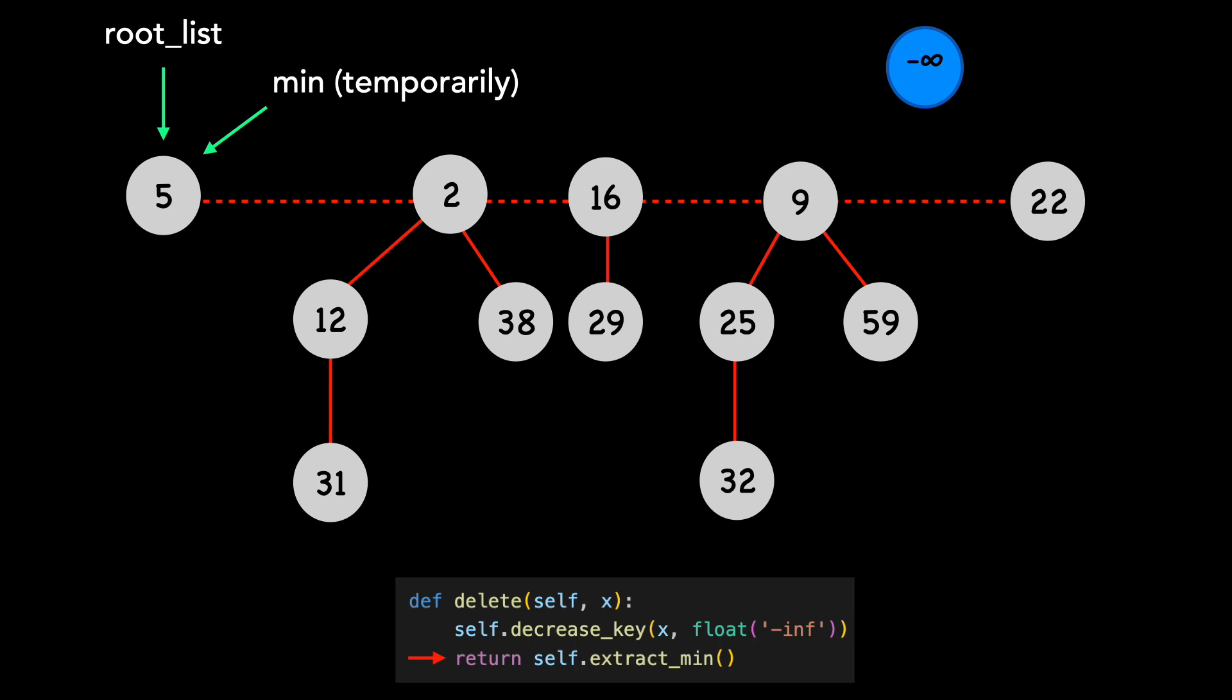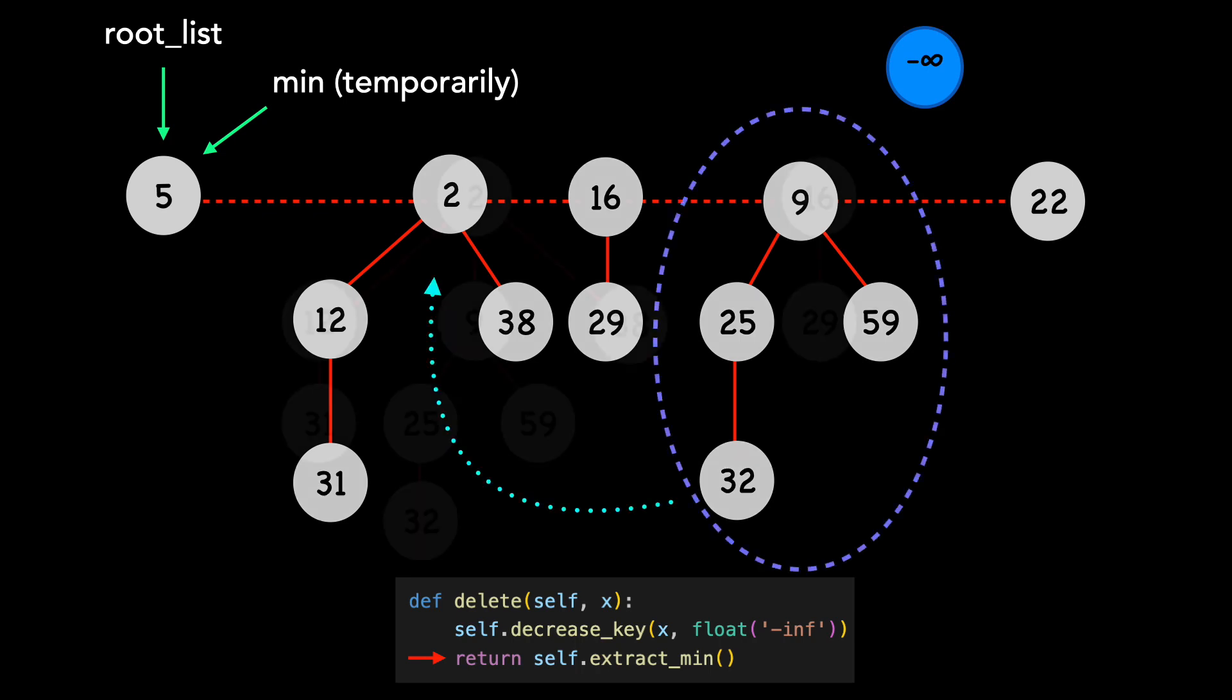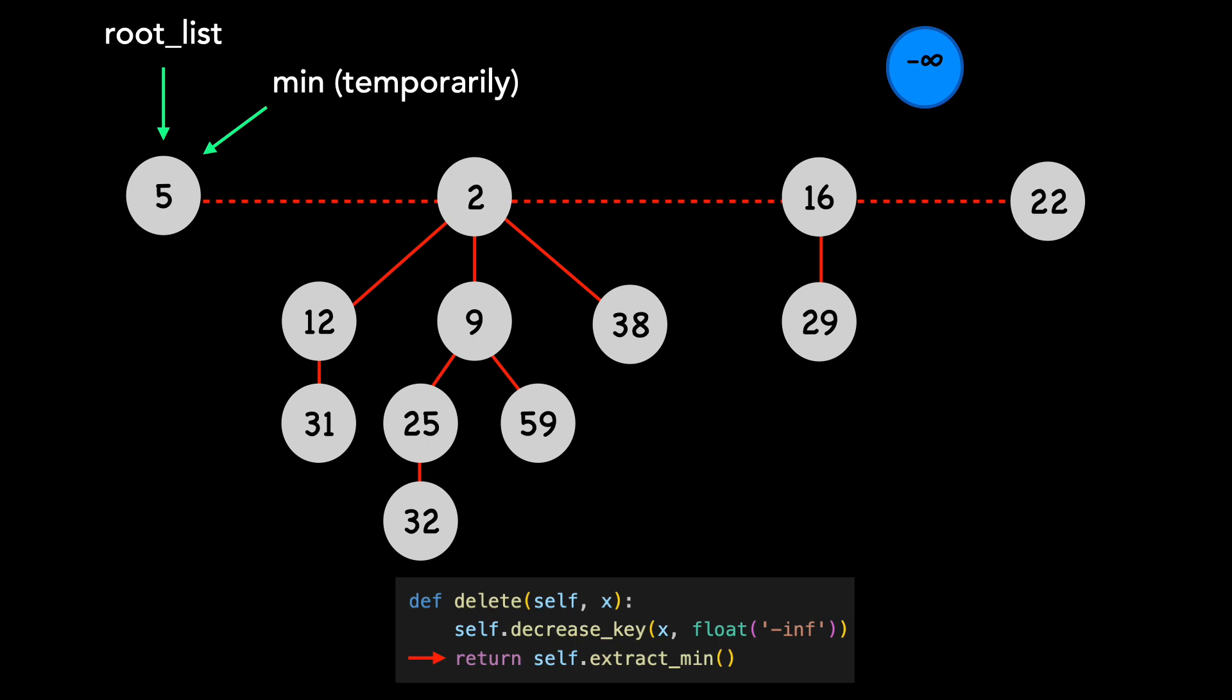We then consolidate root list nodes of equal degree. 9 goes under 2, 22 goes under 5, and finally 16 goes under 5.